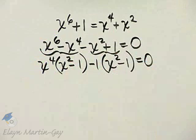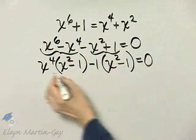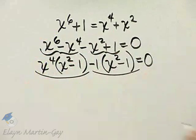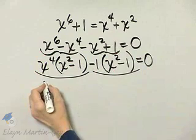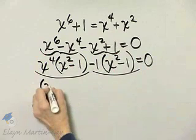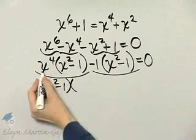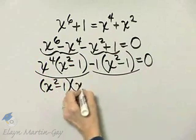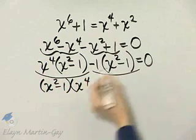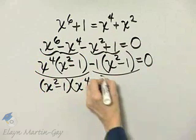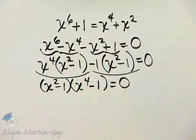Now, I haven't factored yet, but in these two terms, notice there's a common factor of x squared minus 1. And then, if I factor it from here, I have x to the 4th, and from here, minus 1 equals 0.